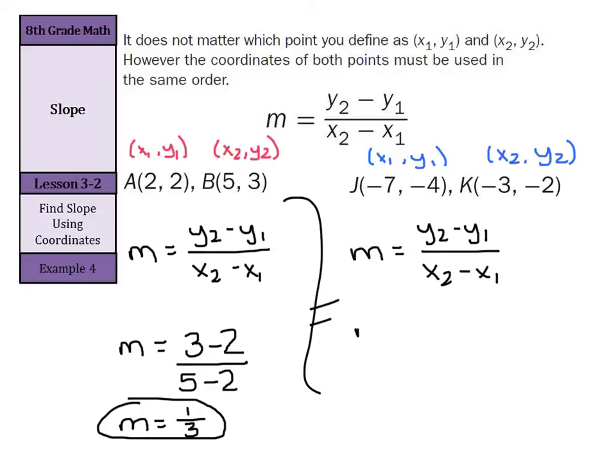So our slope m is going to equal y2 is negative 2 minus y1 is negative 4 divided by x2 is negative 3 minus x1 is negative 7.